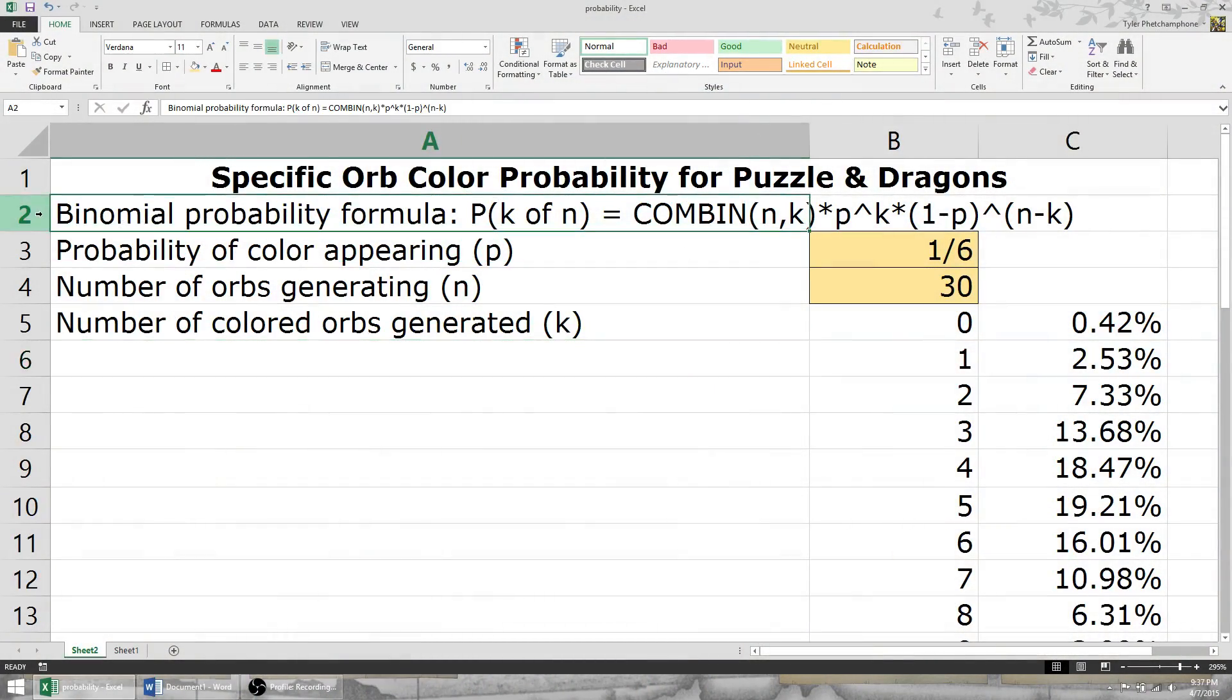The formula that answers our question is called the binomial probability formula. I've put the formula here on the screen, and I'll put it in the about section just in case you'd like to work on it yourself.